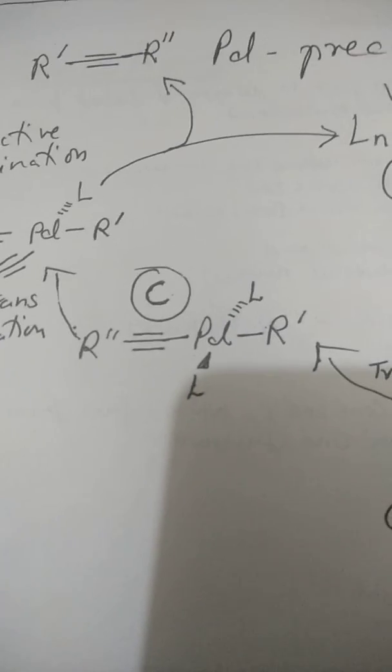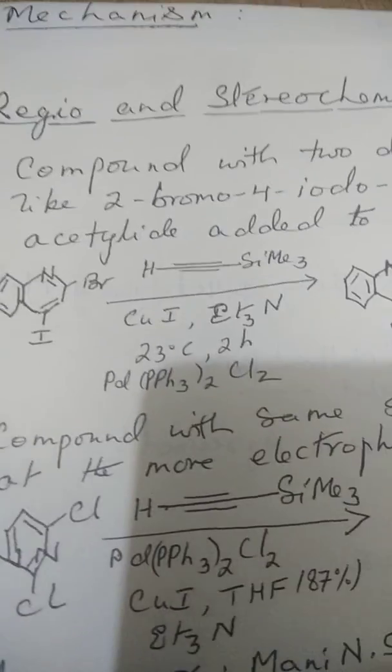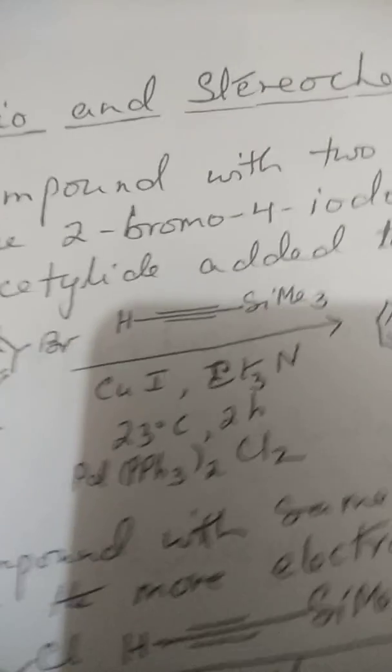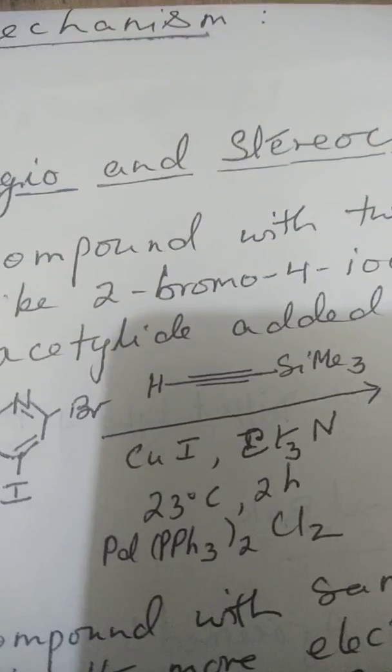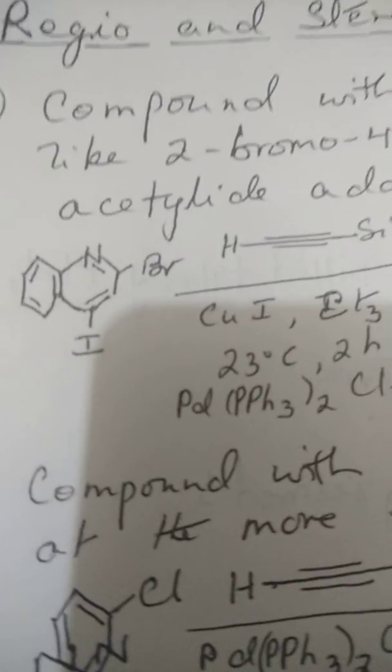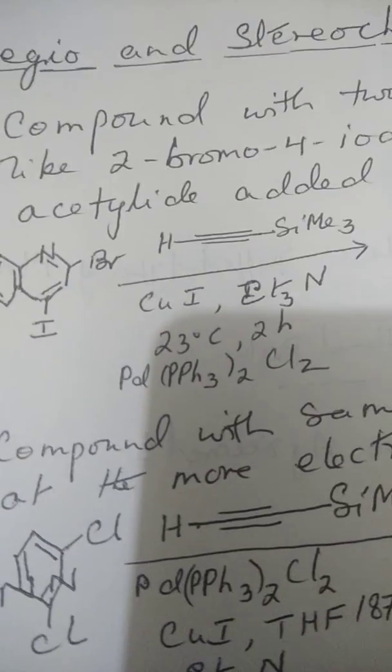Now as far as in this mechanism the regio and stereochemistry is concerned, we will see how this regioselectivity and stereochemistry is dealt with. Because see regio isomers, structural isomers. So when the reaction can occur at more than one site leading to these structural isomers, at which site are regio isomers formed?